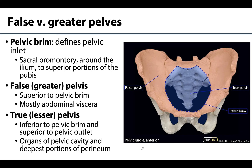The bony rim identified here with this dashed line, which surrounds and defines the pelvic inlet, is referred to as the pelvic brim. Occasionally you will hear the terms pelvic brim and pelvic inlet used interchangeably, and that isn't exactly correct even though they're very closely associated. The pelvic inlet is the superior pelvic aperture — it's the space — whereas the brim is the bony rim that is actually defining that opening.